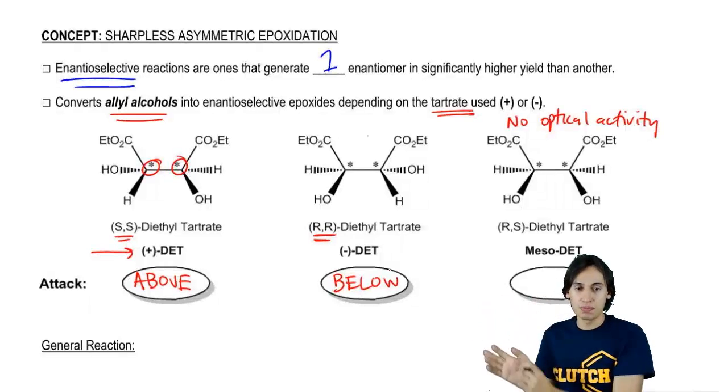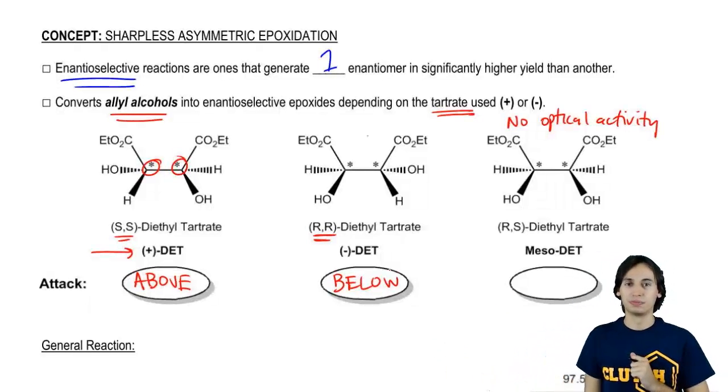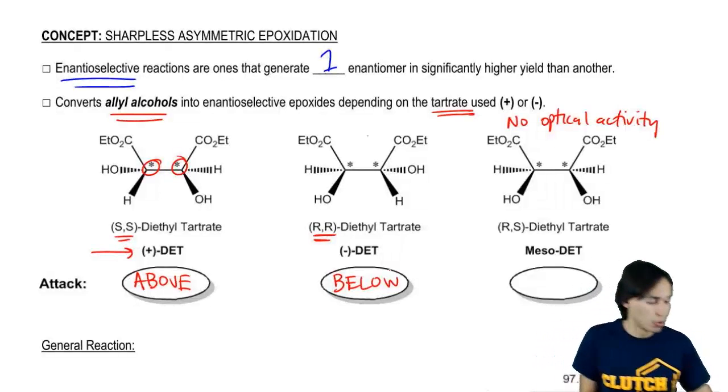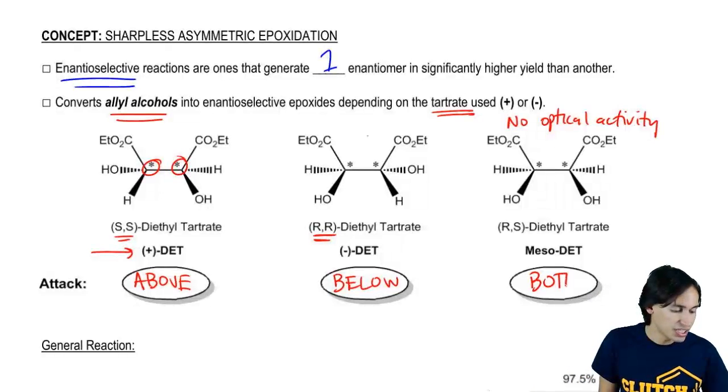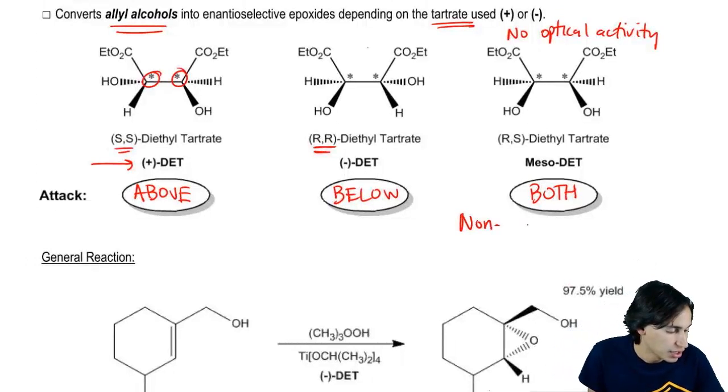So we've got positive is up, negative is down. That's really easy, right? Then we've got meso. What do you think about meso? Well, meso would just be both.